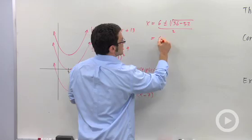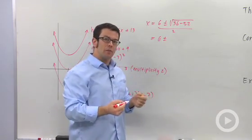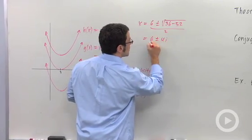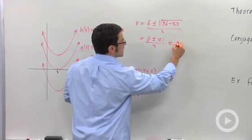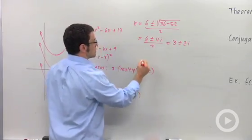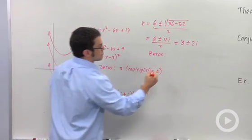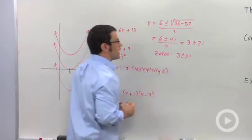So I have 6 plus or minus, this is negative 16, and the square root of negative 16 is 4i, over 2. This becomes 3 plus or minus 2i. These are the two zeros, the zeros of h, 3 plus or minus 2i.